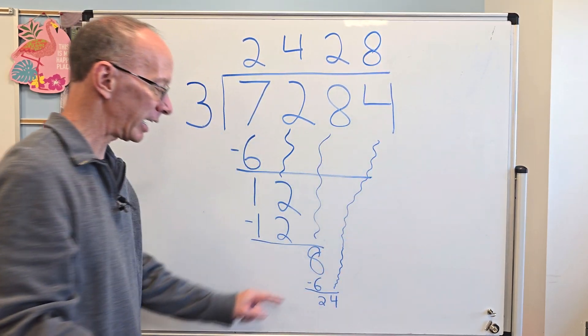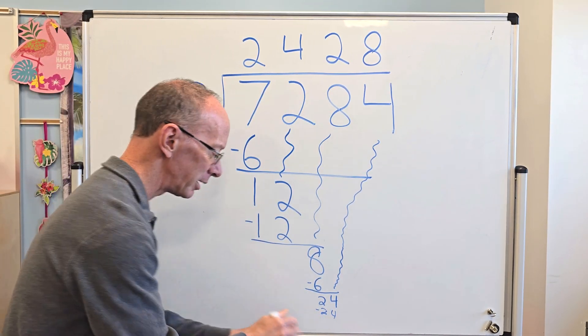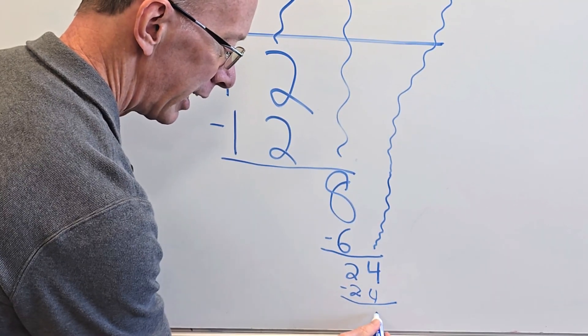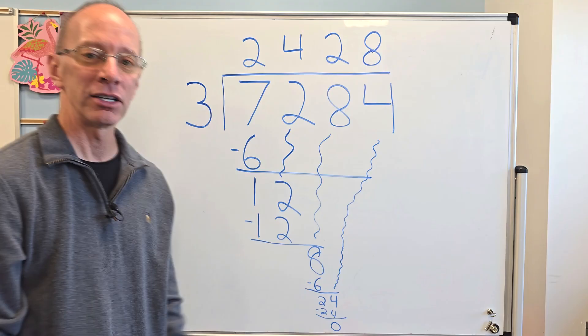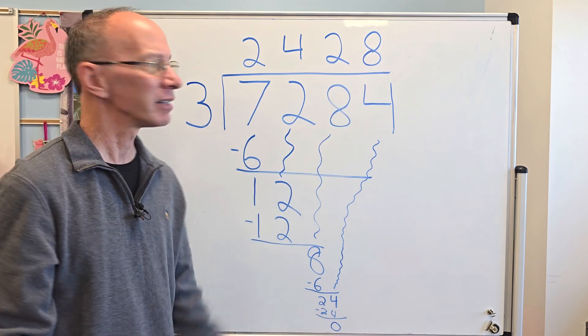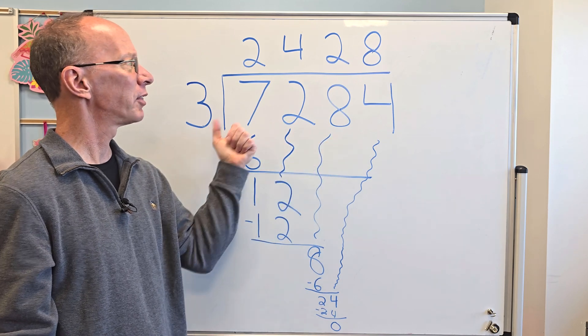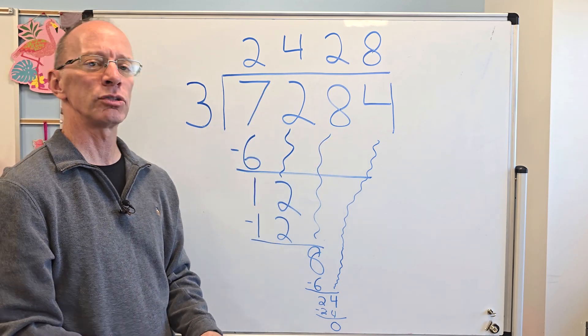And look at that. 8 times 3 is 24. Down here, you might have to zoom in. Come, zoom in, Mr. Cameraman. And I don't have a remainder. Remainder is zero. Nothing. I don't need to put that up there. That's the answer right there. So 7,284 divided by 3 equals 2,428.